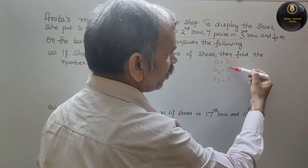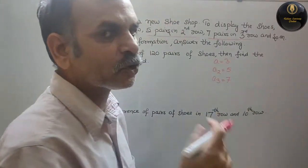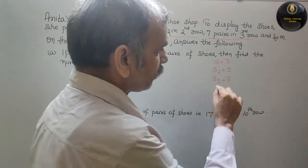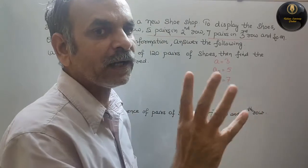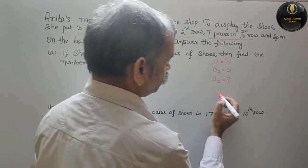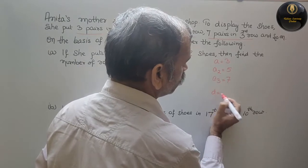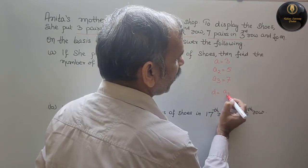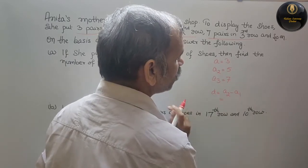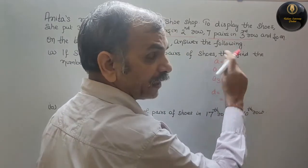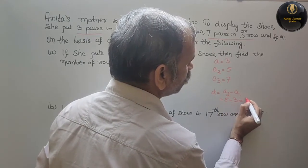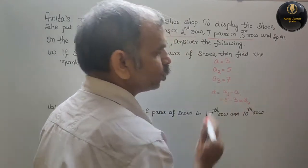This is an AP: 3, 5, 7 and so on. Now we will find the common difference, that is D. D is equal to A2 minus A1, that is 5 minus 3, which is equal to 2. So D is 2.